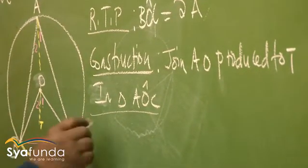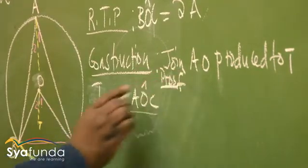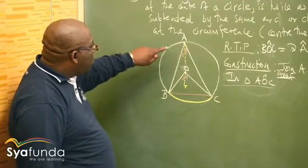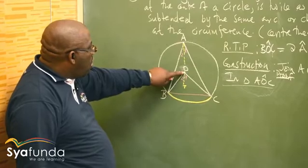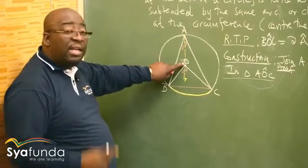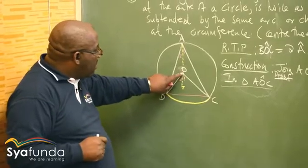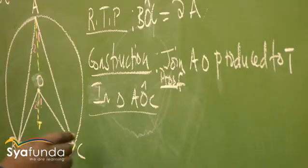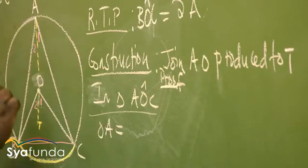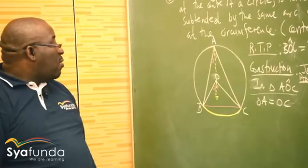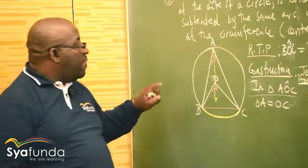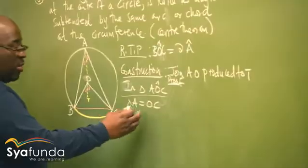Let's do our proof. In triangle AOC: OA equals OC. Why are those two sides the same? They are both radii of the same circle. Therefore, since these two sides are equal, the triangle is isosceles.